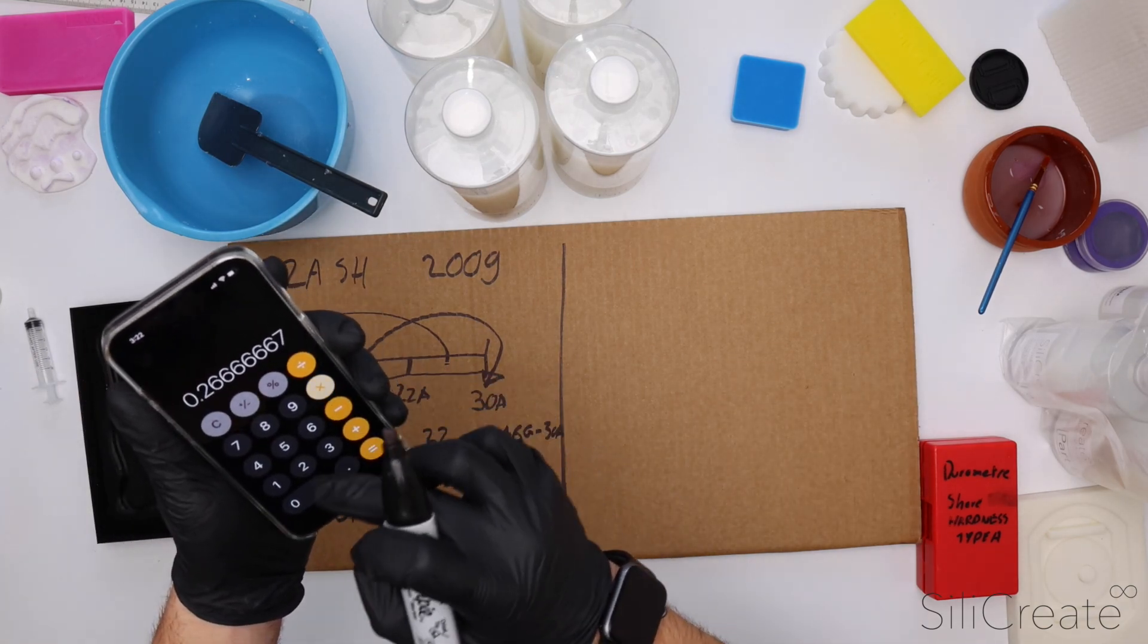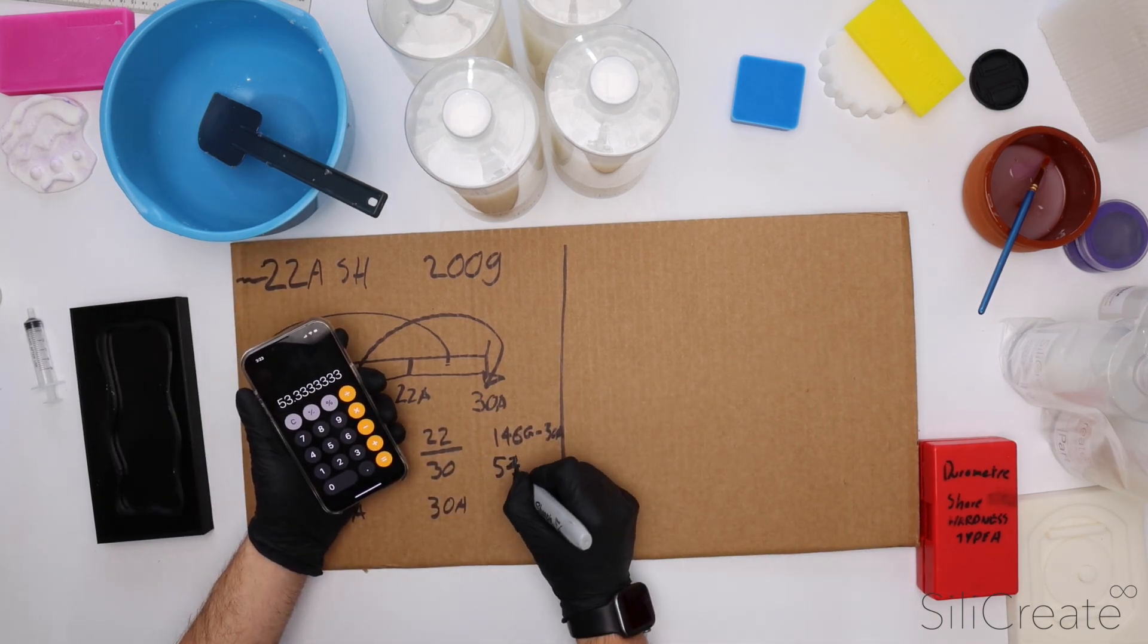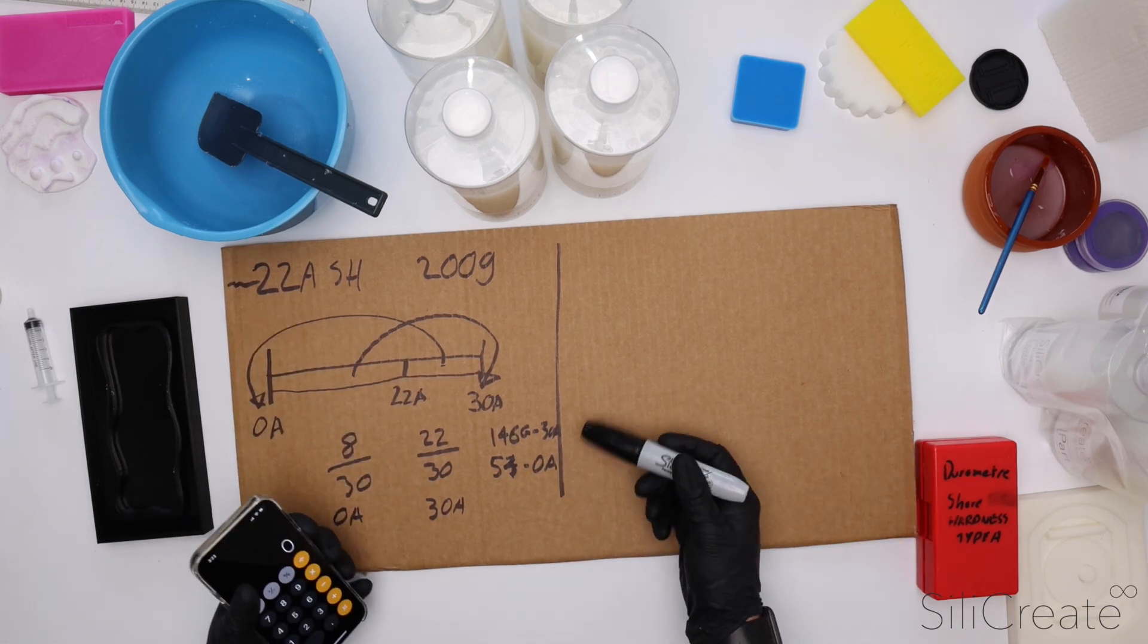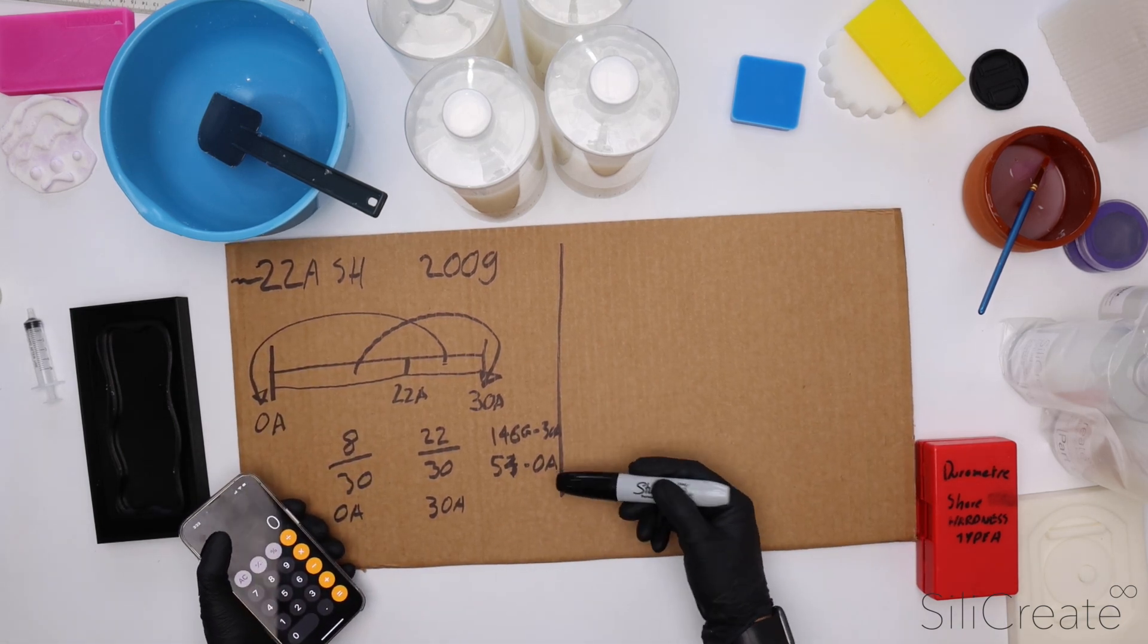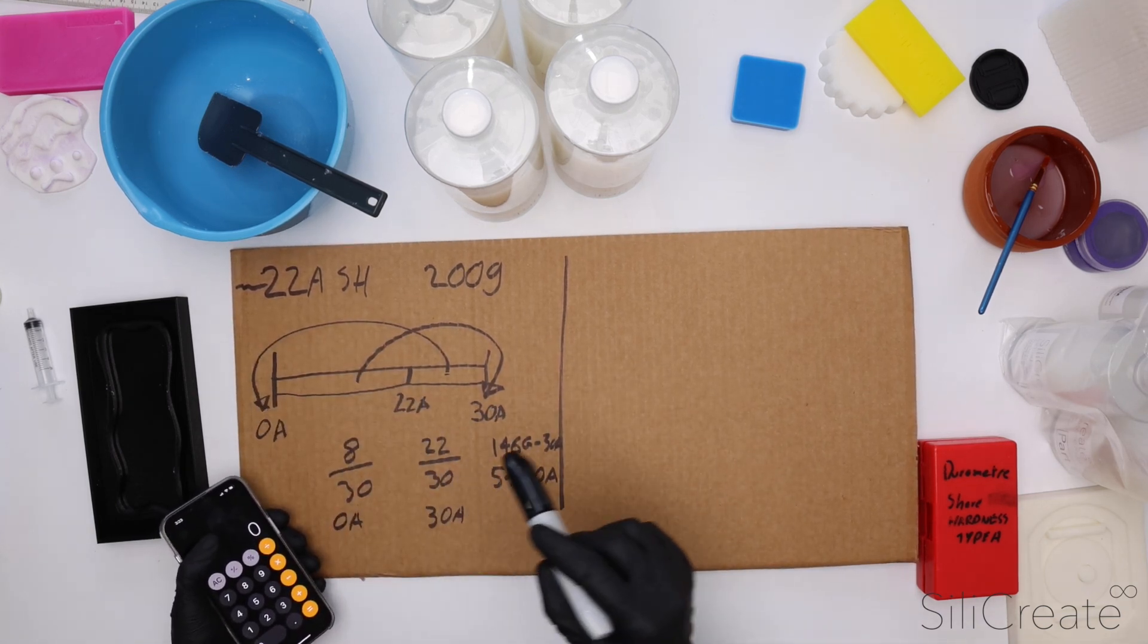And we'll need if we go 8 divided by 30 times by 200, 53 or 54 grams of the 0A. So now we know how much of the 30A and how much of the 0A we're going to need in order to get a composite shore hardness of 22A.